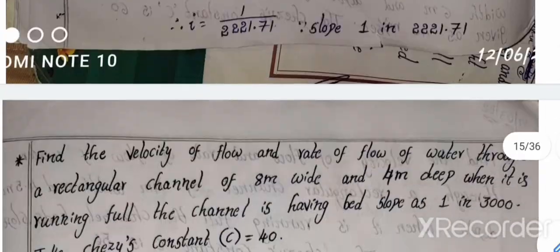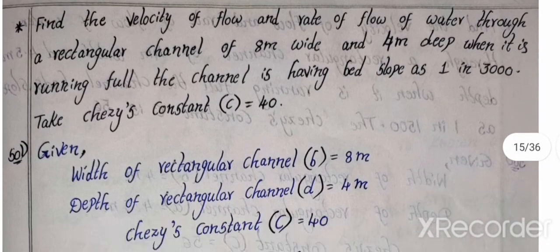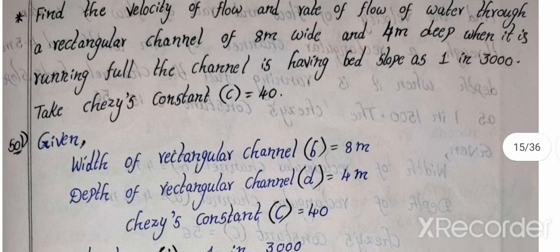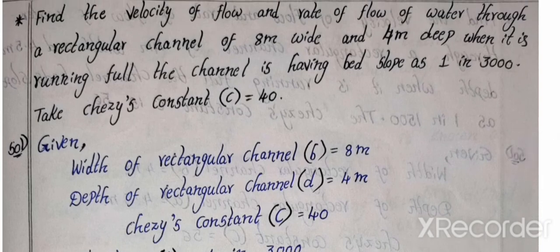So more problem. This problem, calculation to find the velocity and the rate of flow. Discharge velocity calculation. Q equal to A into velocity. So velocity, V equal to C root Mi. Find the velocity of flow and rate of flow through rectangular channel of 8 meters wide, 4 meters deep.